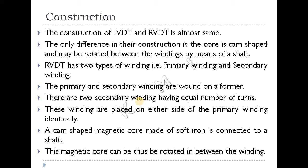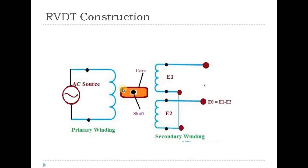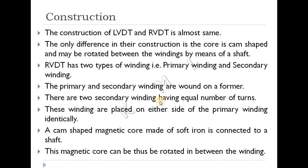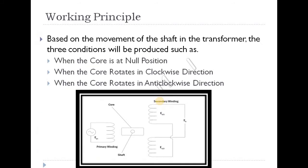The secondary windings are placed on either side of the primary windings identically. A cam-shaped magnetic core made of soft iron is connected to a shaft. The magnetic core may thus be rotated between the windings. This completes the construction of the RVDT.